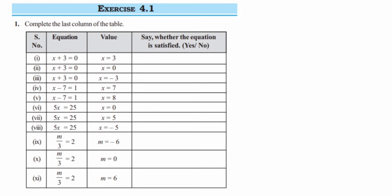Let's start solving. In the first one they have given x is equal to 3, and when you substitute here in place of x you substitute 3, so 3 plus 3 is equal to 6. But here they have given it is equal to 0, so they are not same, so the answer will be no.